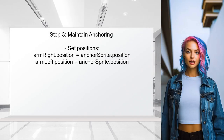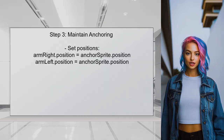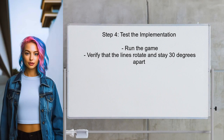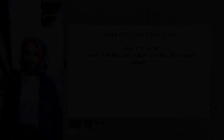Additionally, ensure that the arms are always anchored at the same point. This can be done by setting their positions relative to the anchor sprite. Finally, test the implementation to confirm that the lines rotate correctly and maintain the 30-degree separation as intended.